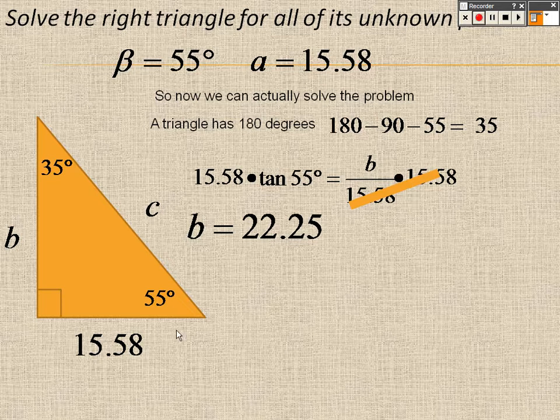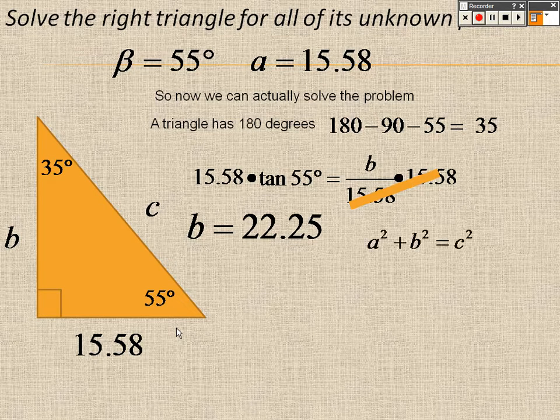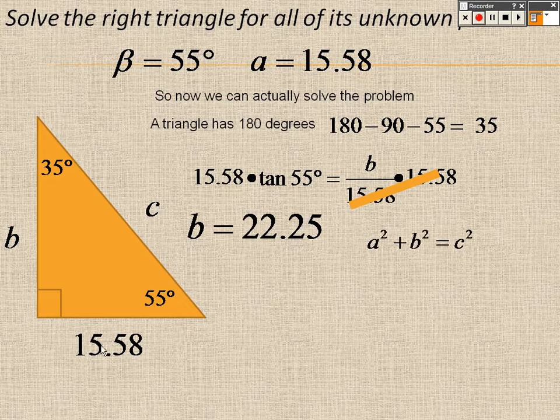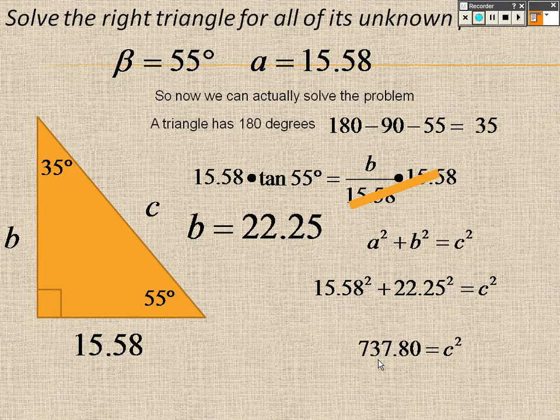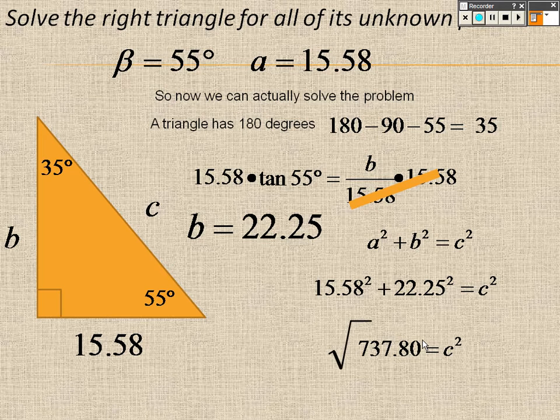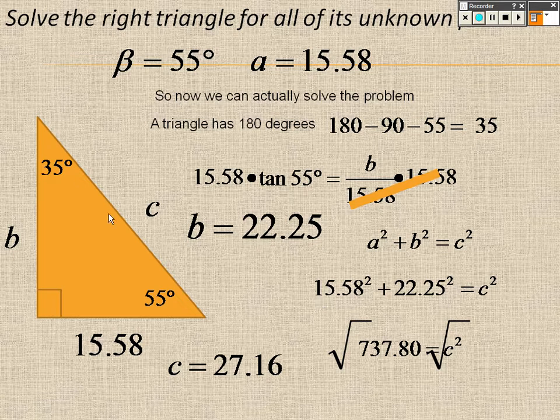And because now I know two sides and the right triangle, I can use Pythagorean theorem. So it's 15.58 squared plus 22.25 squared, which gives me 737.8 equals c squared. So I can square root both sides, so you get about 27.16. And once again, you know if you're doing it right because it's the longest side. C is the longest length. So just something to keep in mind when you're doing these.